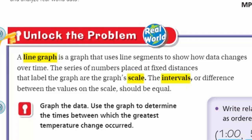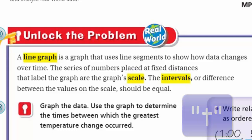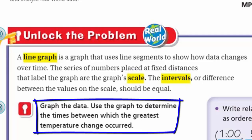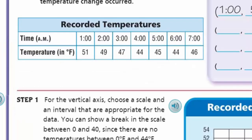This lesson is about things that change over time — like temperature, which is what we're going to look at today. Temperature changes over time: a little cooler in the morning, a little warmer by midday. We're going to graph the data and use the graph to determine the times between which the greatest temperature change occurred. Let's refer back to our math vocabulary and recorded temperatures.